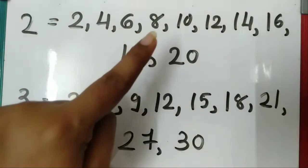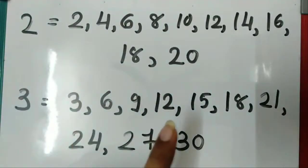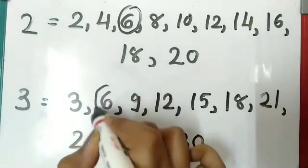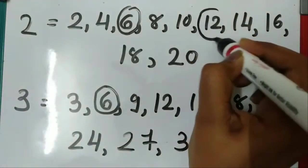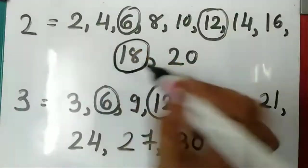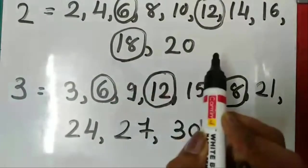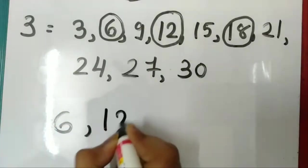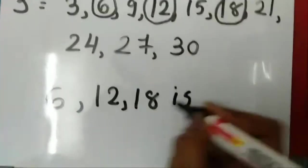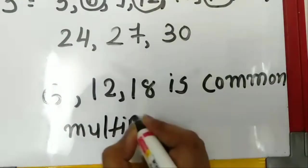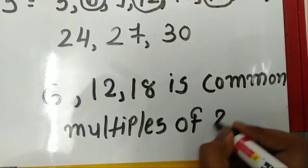Multiples of 2: 2, 4, 6, 8, 10, 12, 14, 16, 18, 20. Multiples of 3: 3, 6, 9, 12, 15, 18, 21, 24, 27, 30. तो देखो — कौन से numbers 2 में भी हैं और 3 में भी हैं? 2 में है 6, 3 में भी है 6 — I'll circle it. 12 है 2 में? Yes, और 3 में भी 12 है — circle. 18 भी 2 में है और 3 में भी है। So 6, 12 and 18 are common multiples of 2 and 3.